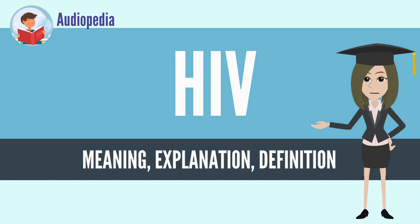Within these bodily fluids, HIV is present as both free virus particles and virus within infected immune cells. HIV infects vital cells in the human immune system, such as helper T cells — specifically CD4+ T cells — macrophages, and dendritic cells.